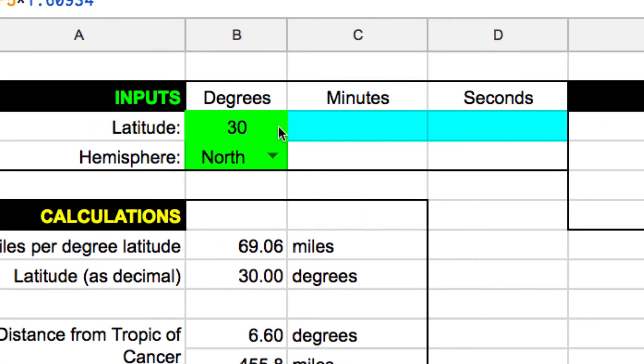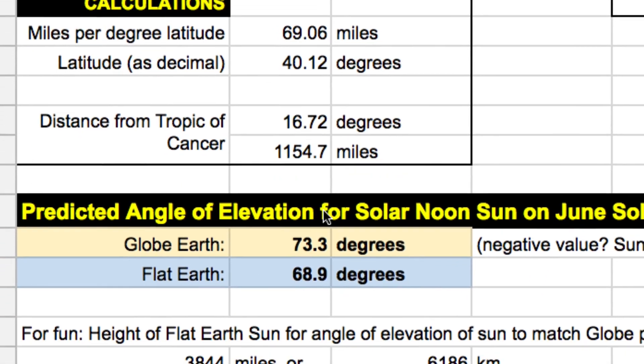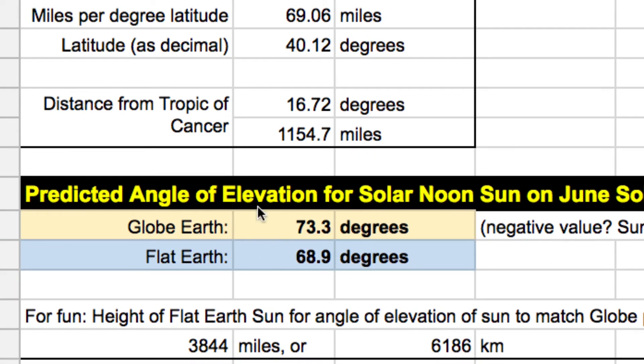All right, so here we are in the calculator, and the first thing we want to do is start off with our inputs. Now, you can just type in a decimal degree. So for example, 40.1. I can type in 40.1. It'll run all the calculations. Or I can put it in degrees, minutes, and seconds. So I had 40, 47.17, and it'll also make the calculations. So if we now scroll down, there's a couple of intermediate calculations. If we scroll down, we see what the predicted angle of elevation is for solar noon, and there's a difference between the globe earth and the flat earth.